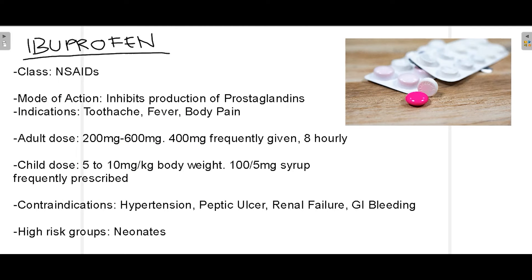Ibuprofen is the most commonly prescribed analgesic along with paracetamol. Ibuprofen belongs to a class of drugs called NSAIDs — non-steroidal anti-inflammatory drugs. Its mode of action is to inhibit the production of prostaglandins. When the body experiences pain, prostaglandins are produced, causing mild or severe pain depending on the etiology. So the main mode of action of ibuprofen, or any NSAID, is inhibition of prostaglandin production.